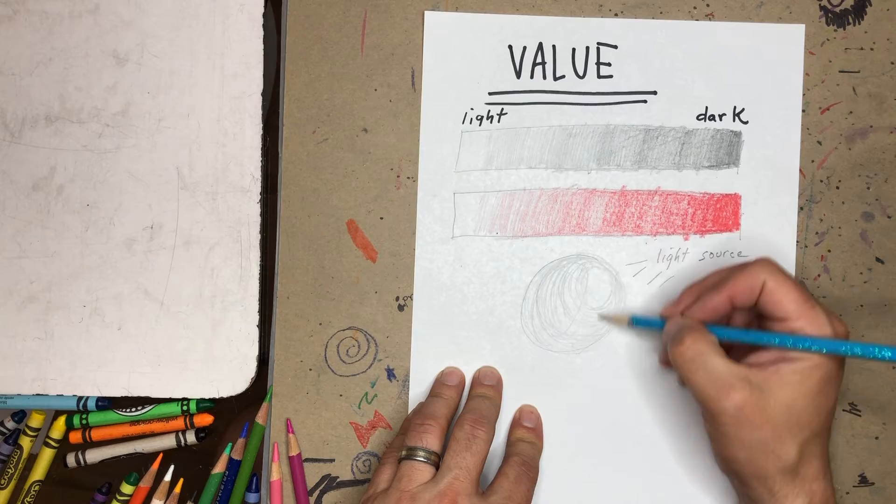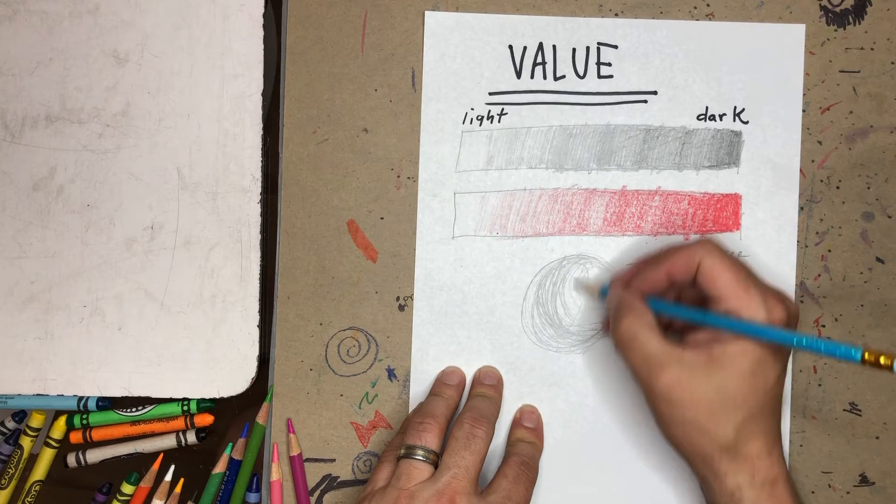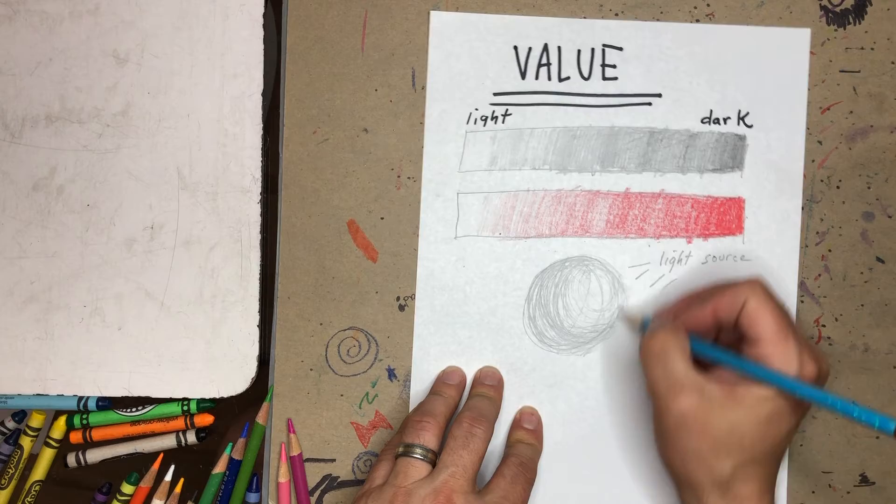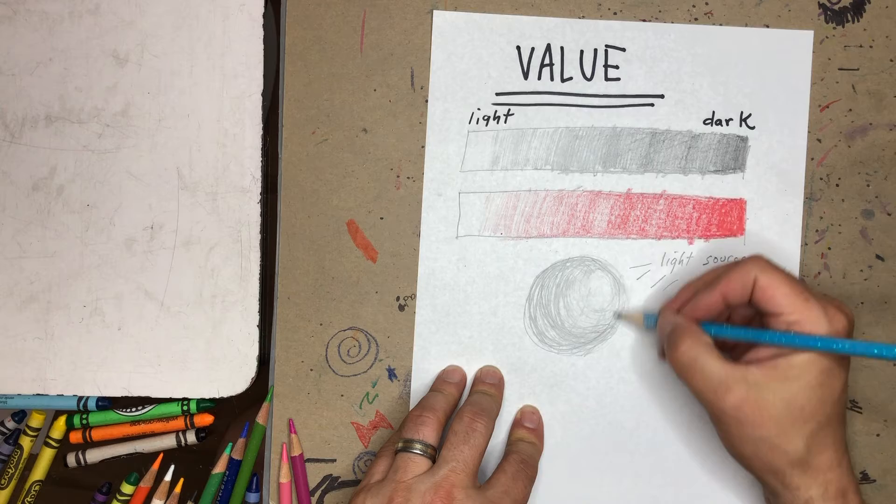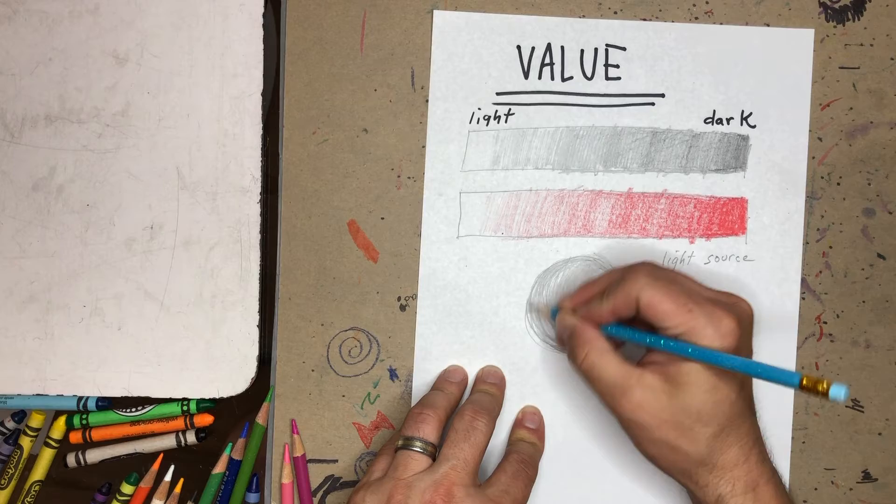Again, if we were painting, it would just be a darker color of gray. But because we only have pencils, it's the amount of pressure that I put on to make it darker. So I can erase the spot where the highlight would be, and then, like I said, it would get darker and more of a shadow cast on the other side of the ball or sphere.